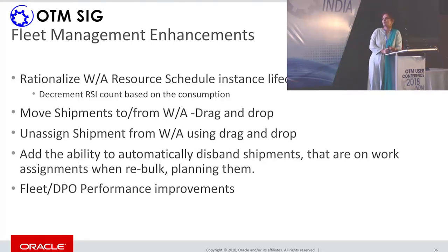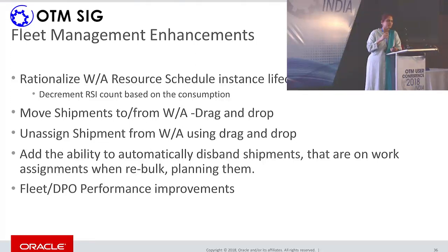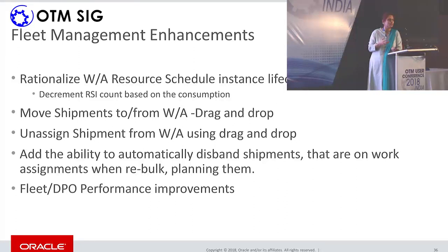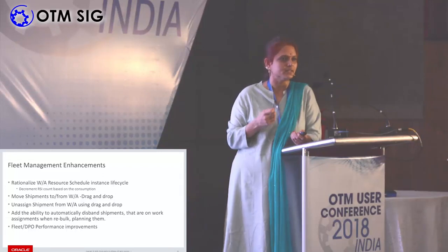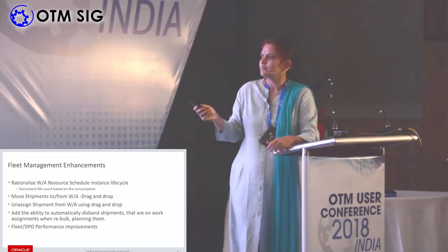We also made DPO performance improvements. DPO assigns a set of drivers to shipments automatically. With 100 shipments and 20 drivers, you provide the shipment query and available drivers and run the fleet bulk plan — drivers are assigned based on criteria like maximum shipments per driver string. When using a cost-based algorithm with a high shipment count, the processing time was excessive, so we made improvements to the DPO algorithm performance.